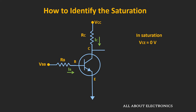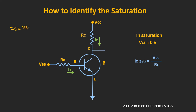At that time, this collector current Ic will be maximum. That means Ic(sat) is equal to voltage Vcc divided by Rc. And this will be the maximum current that can flow through the collector terminal. The base current Ib can be given as (Vbb − Vbe) divided by Rb. If we assume the transistor is operating in the active region, the collector current Ic can be given as β×Ib. So if this collector current Ic is greater than Ic(sat), then we can say that the transistor is operating in the saturation region, because Ic(sat) is the maximum possible current which can flow through the transistor.